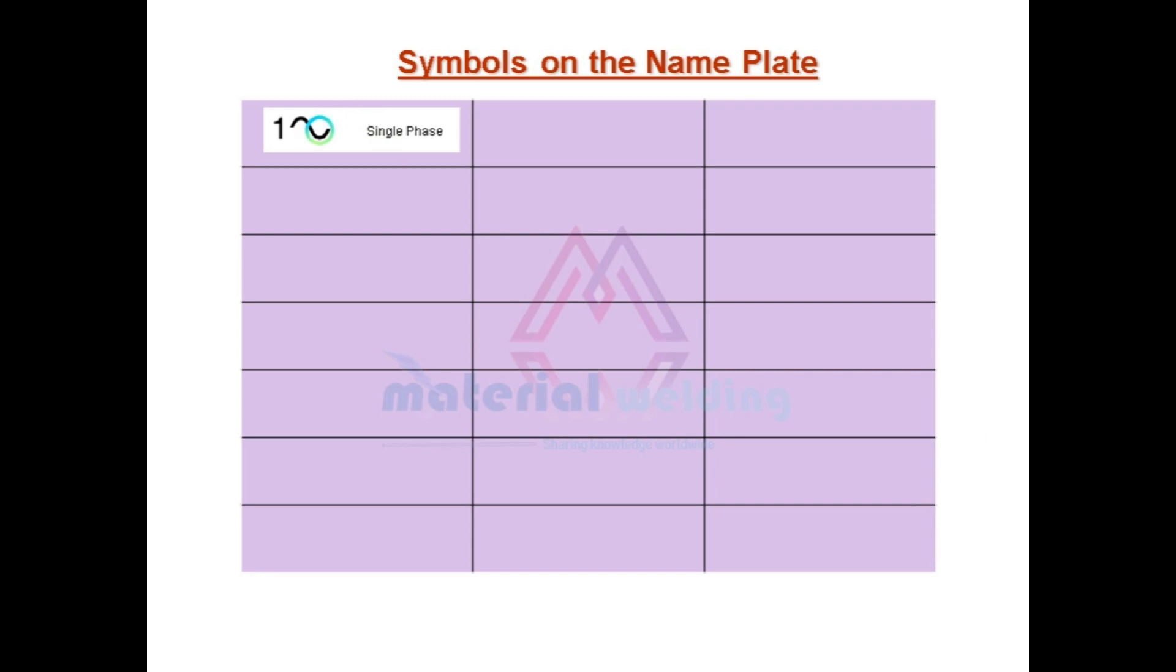Let's go one by one for each symbol. This is for single phase alternating current, this is for three phase alternating current, this is for direct current. And we know in DC there are no phases as in alternating current. This is for constant current type welding power source. We will find them on SMAW and TIG welding machines. It is also called drooping characteristic.